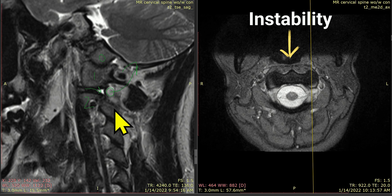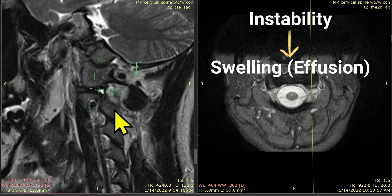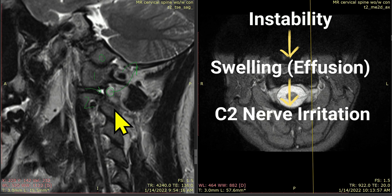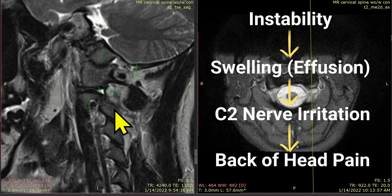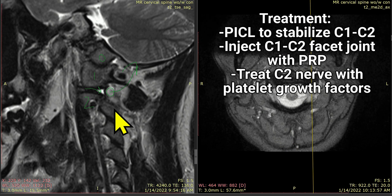Instability means an effusion — meaning swelling in the joint. The swelling in the joint puts pressure on the nerve, and she gets the issues that go up into the left side of the back of her head. So the way to treat this patient, obviously, is to stabilize the C1-C2 with the PICL procedure.